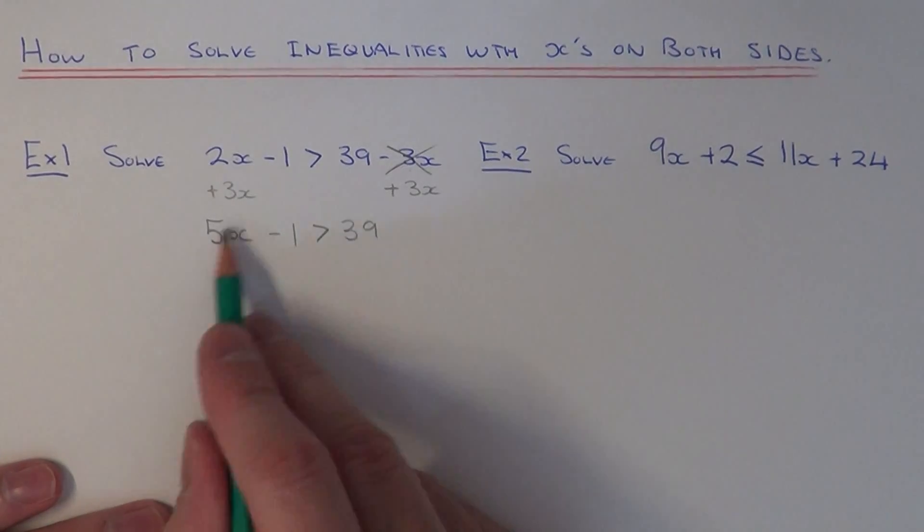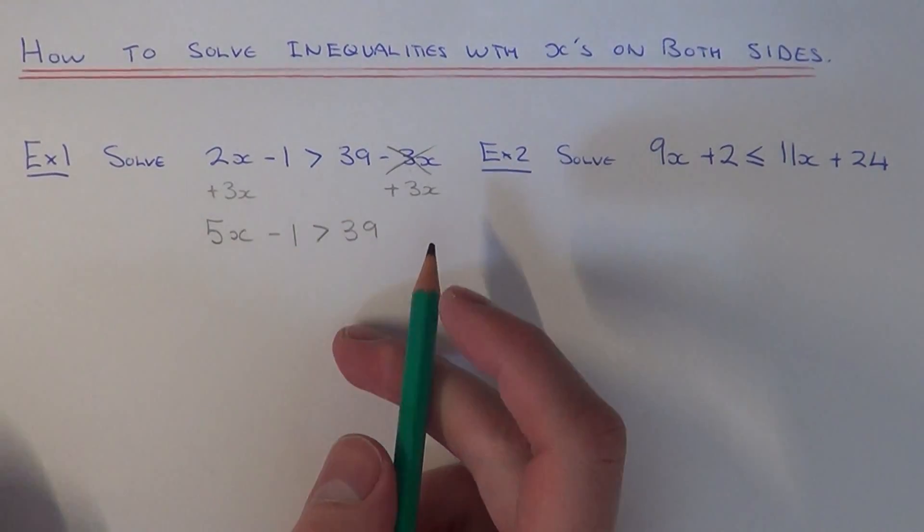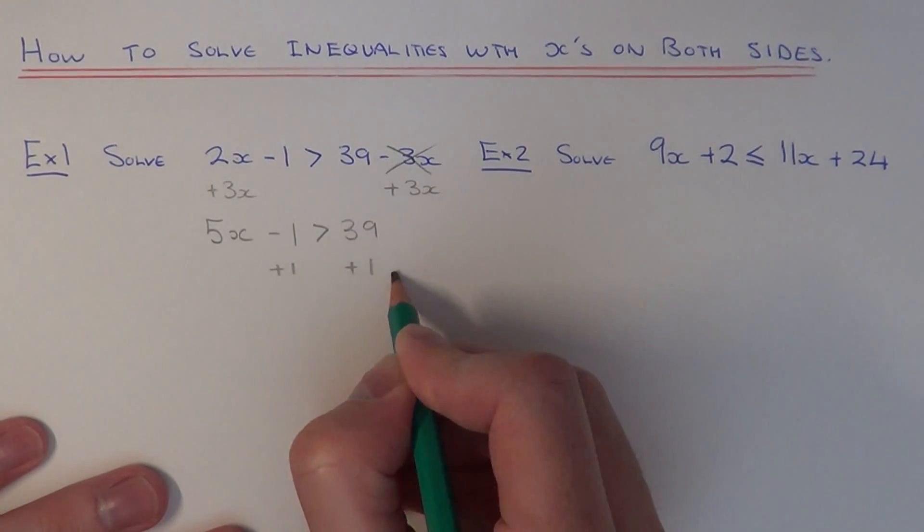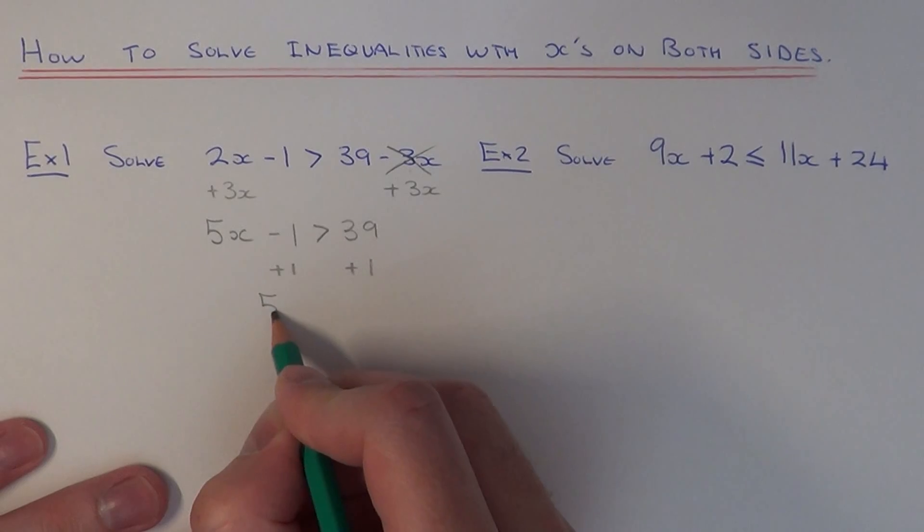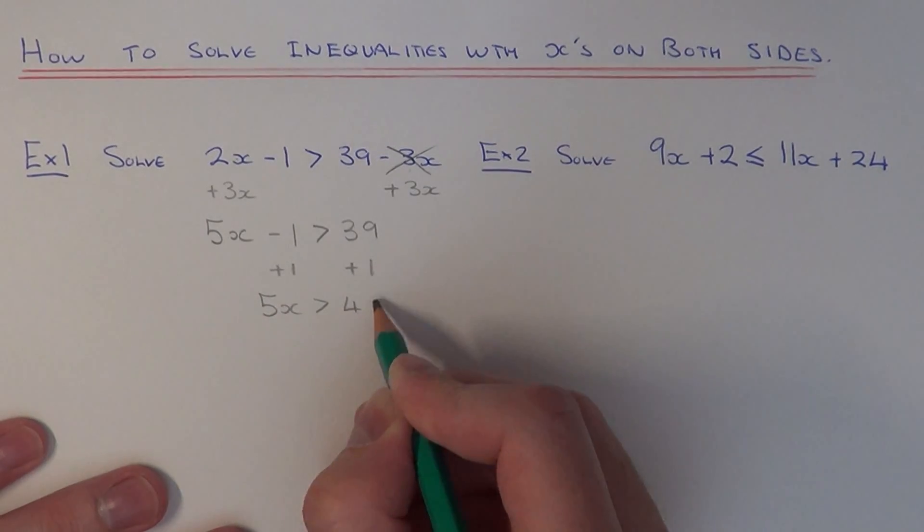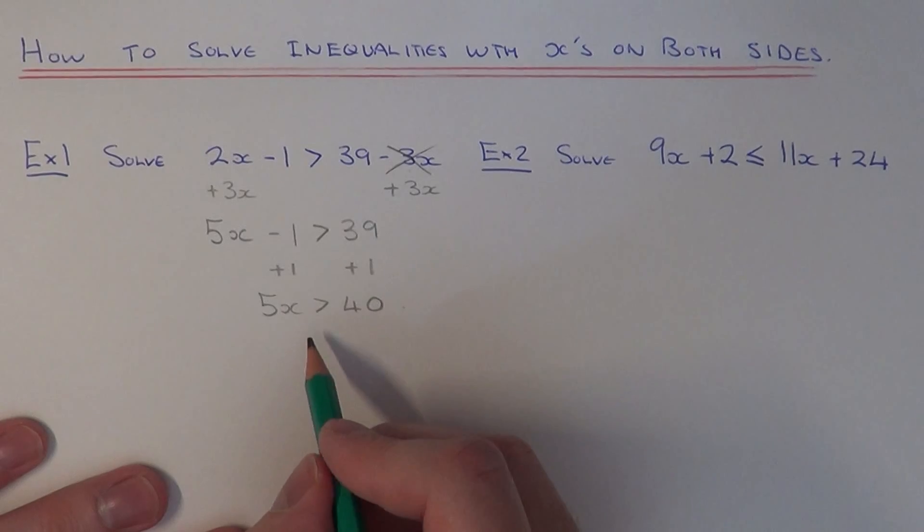So we've now ended up with a simple inequality, which we can solve by doing our normal inverses. So if we get rid of the minus 1 by adding 1 to both sides, this will give us 5x is more than, 39 add 1 is 40.